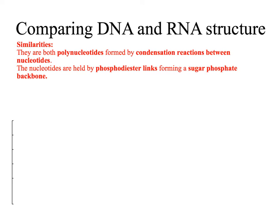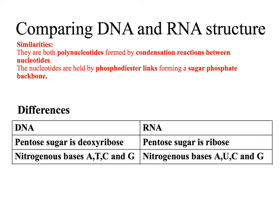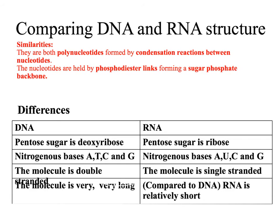To summarise: both DNA and RNA are polynucleotides formed by condensation reactions between nucleotide monomers. The bonds between the nucleotides are phosphodiester links. There is a sugar-phosphate backbone with organic nitrogenous bases sticking out to one side. The differences between DNA and RNA are: in DNA the sugar is deoxyribose whereas in RNA it is ribose; DNA has the bases A, T, C, and G whereas RNA has A, U, C, and G; DNA is double-stranded whereas RNA is single-stranded; and DNA is a very long molecule whereas RNA is relatively short.